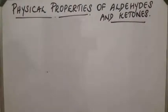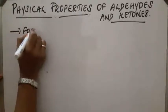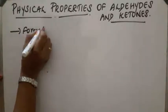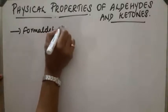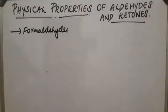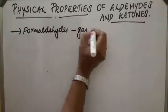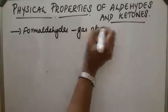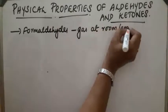Physical properties of aldehydes and ketones. The first member, formaldehyde, is a gas at room temperature.